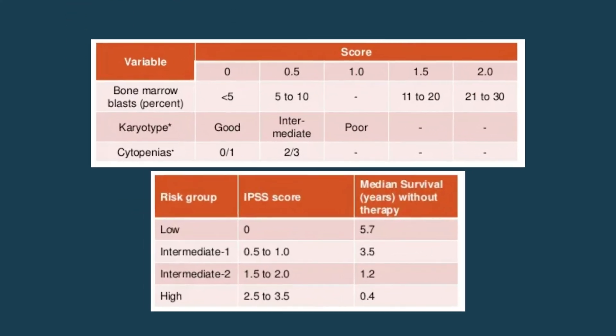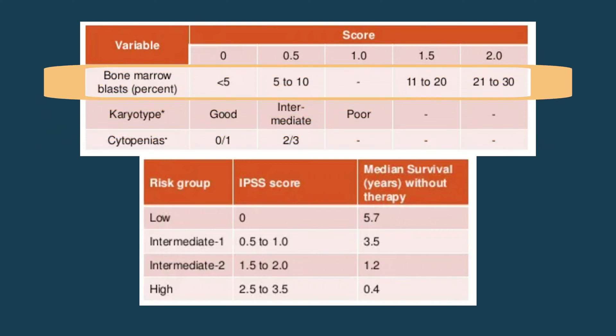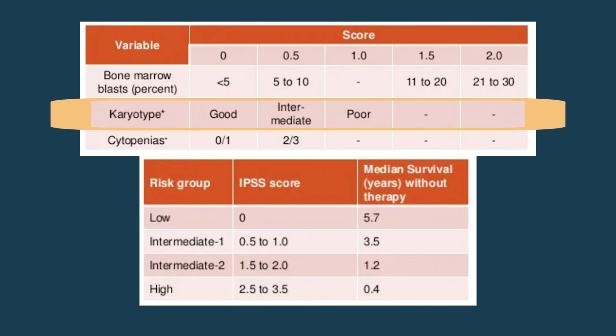In those systems, we look at a person's blood counts and the degree of anemia, low platelet count, or low white blood cell count. We look at the blast percentage in the bone marrow — blasts are immature white blood cells, and if those are 5% or greater, we say that's abnormal. We also look at the genetics of the MDS and use that system to risk stratify people.